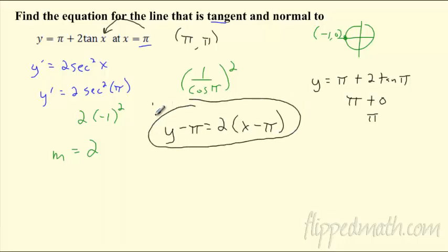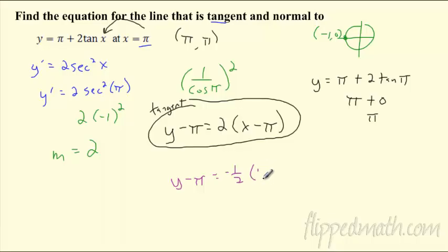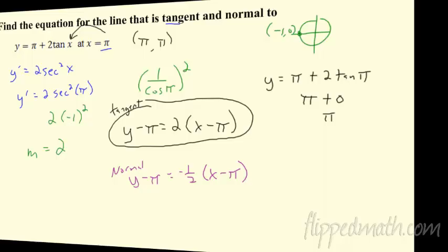So that's my tangent line right there. For the normal line, you just flip the slope. So if I'm going to flip it and change the sign, the normal line is y − π = −(1/2)(x − π). That's the normal — perpendicular to the tangent. Awesome — we are killing it.